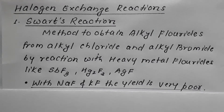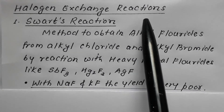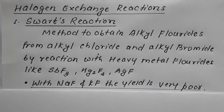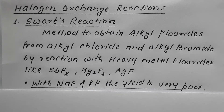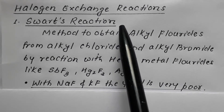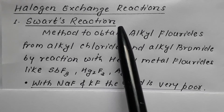Now we come to the method termed as the halogen exchange reaction, where one kind of halogen is exchanged by another kind of halogen. The reason behind this is that all the methods previously dealt with for the preparation of haloalkanes mostly result in formation of chloroalkanes. So in order to prepare iodoalkanes or fluoroalkanes, these halogen exchange reactions are very handy. The first of these is the Swarts reaction.